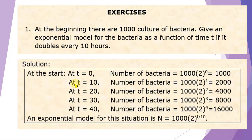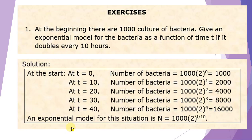At t equals 10 hours, the number of bacteria becomes the initial amount 1,000 times 2 raised to 1 — that's 2,000. At t equals 20, it becomes 4,000; at t equals 30, 8,000, and so on. The exponential model for this problem is: N equals 1,000 times (2) raised to t over 10.